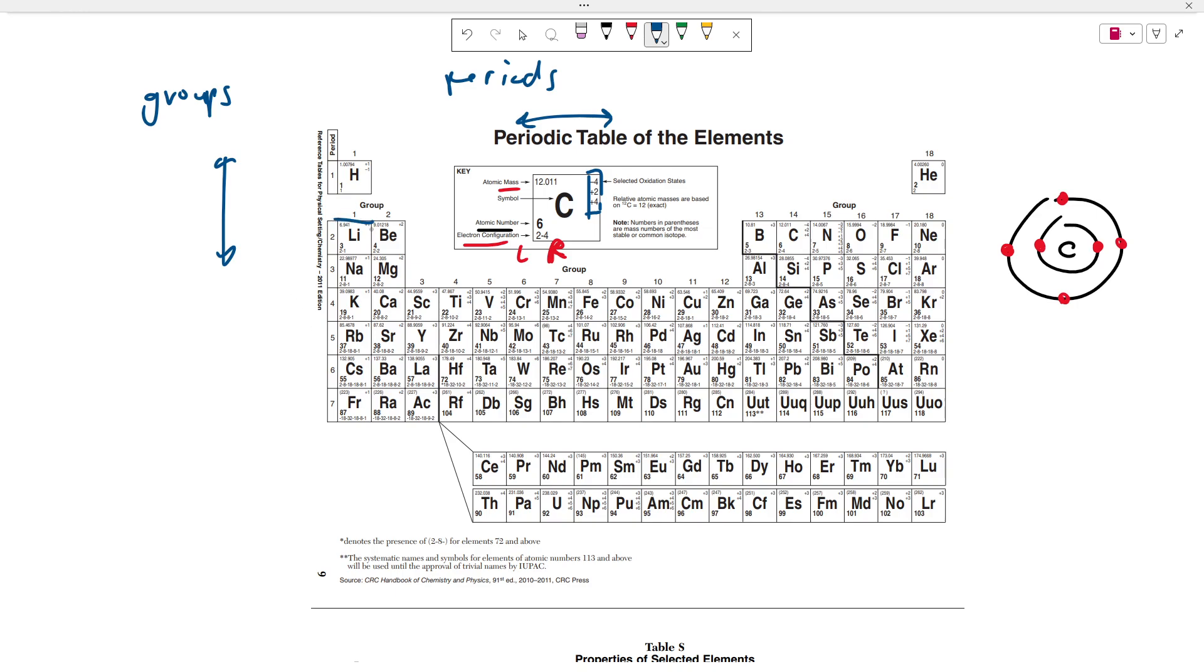So we call group one elements, excluding hydrogen, alkaline metals. Anything in group two, because they each have two valence electrons, we call alkaline earth metals.